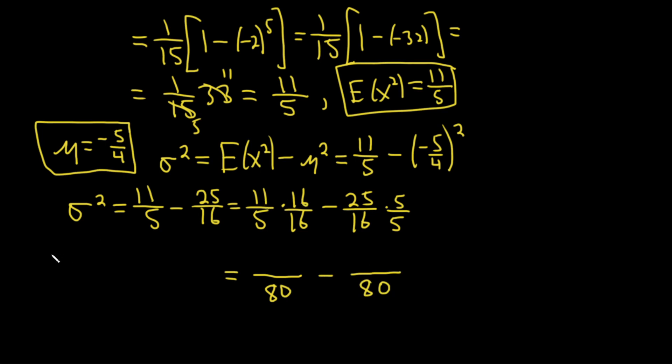So 10 times 16 is 160, then one more 16 gives 176. And 25 times 5 is 125.